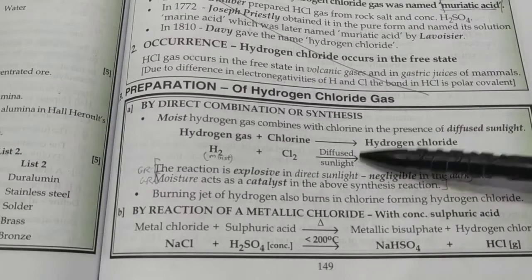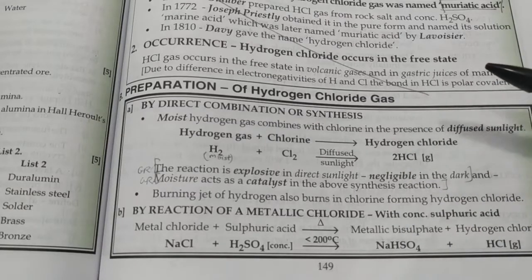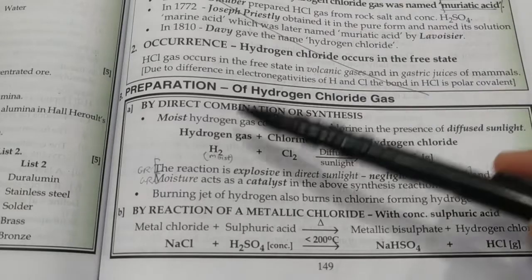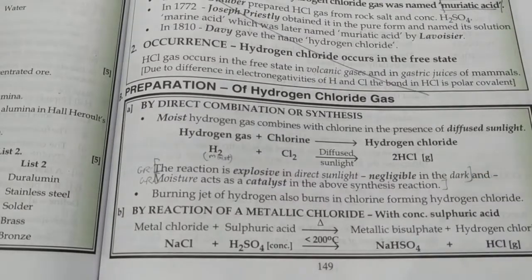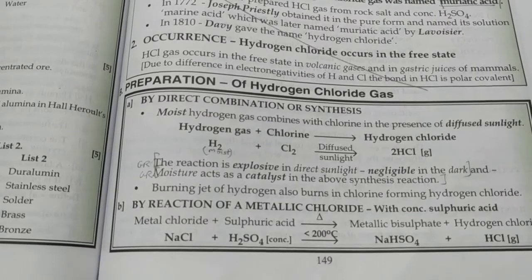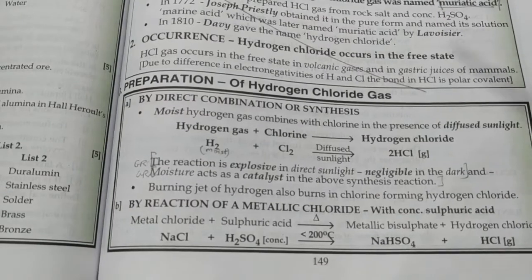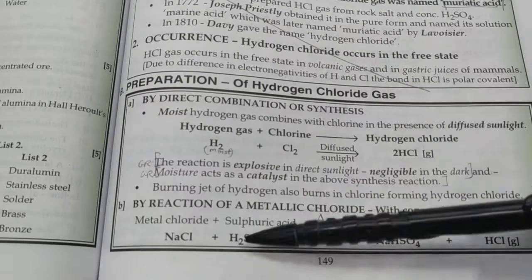We must use diffuse sunlight because in direct sunlight the reaction is very explosive, and in the dark the reaction is very negligible. Moist hydrogen should be used because the moisture acts as a catalyst.